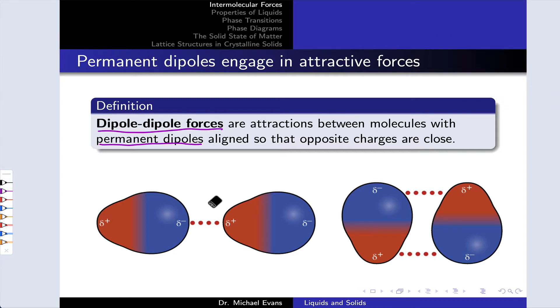And this happens when the oppositely charged ends of two molecules approach one another and are pulled together through electrostatic attraction. So opposites attract.